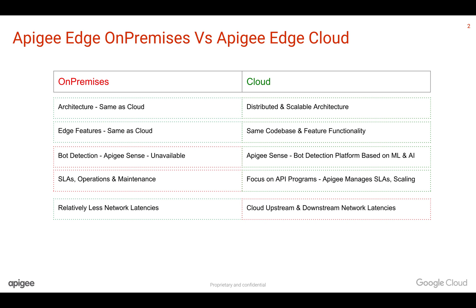When it comes to cost, on-premises is costlier in the long term. With cloud, it will be much lower cost because you don't need to worry about training, operations, maintenance, procuring hardware, or maintaining hardware — you just focus on building APIs on Apigee Edge Cloud.